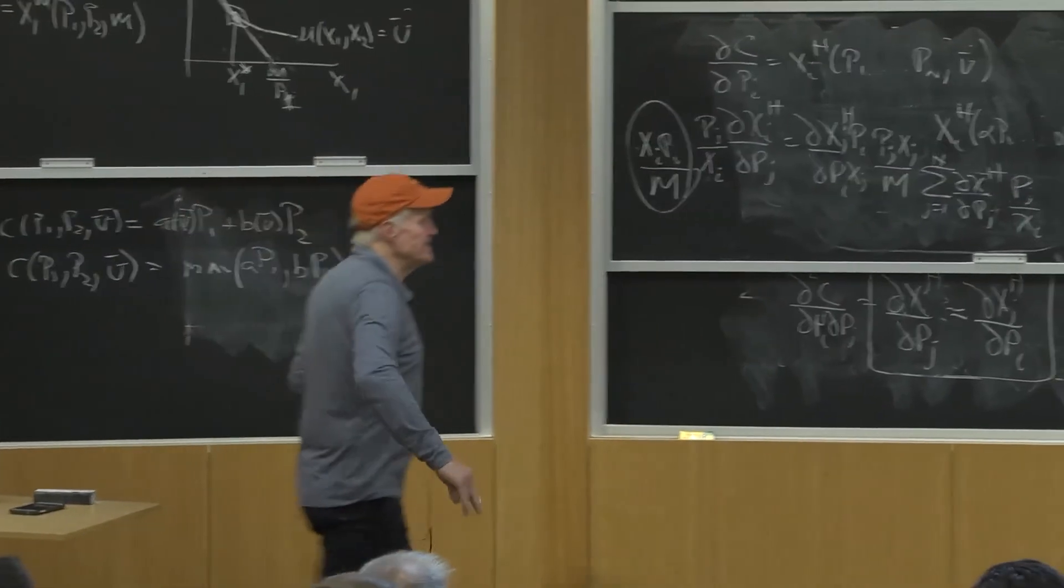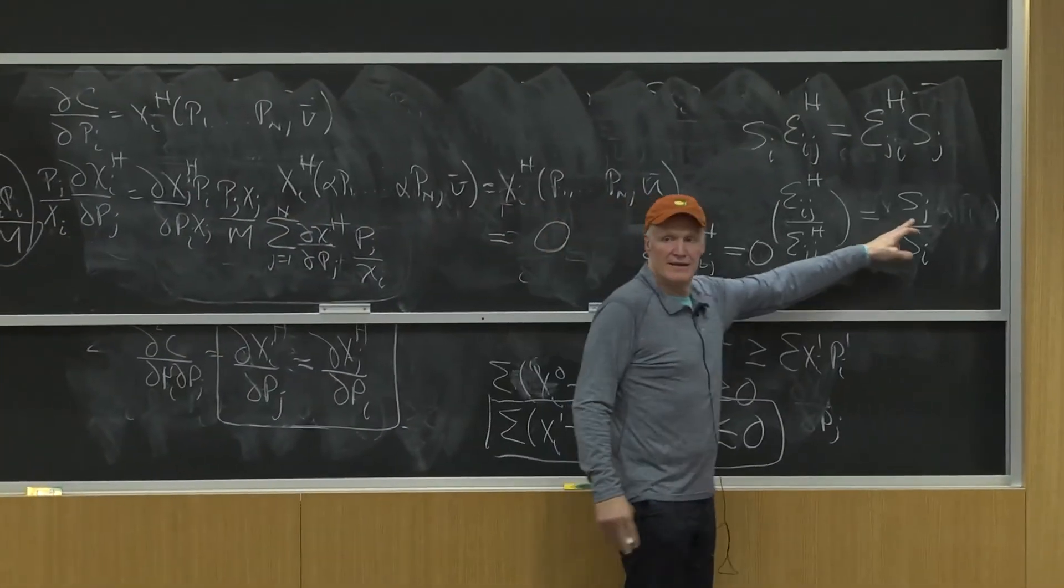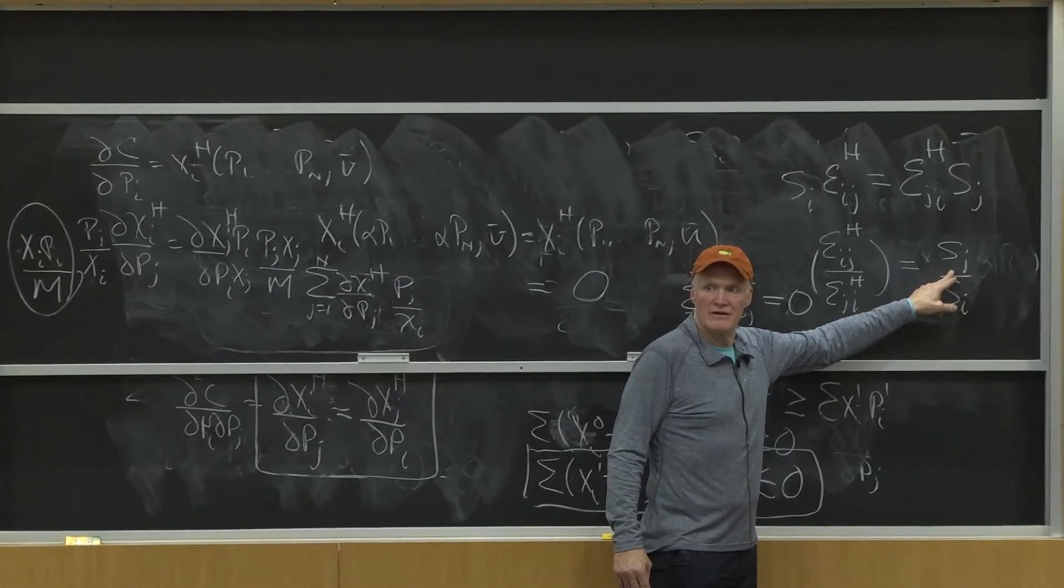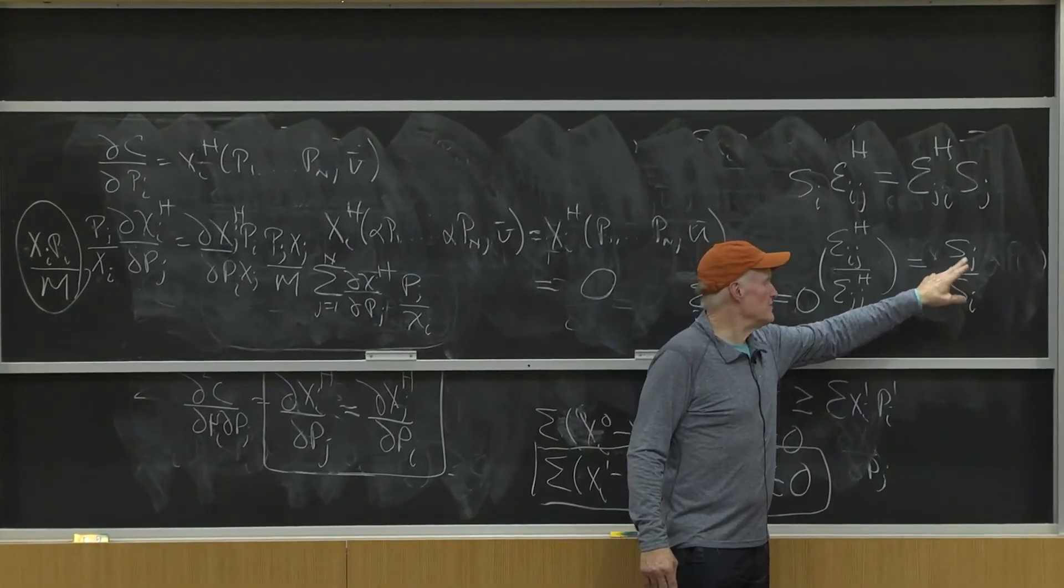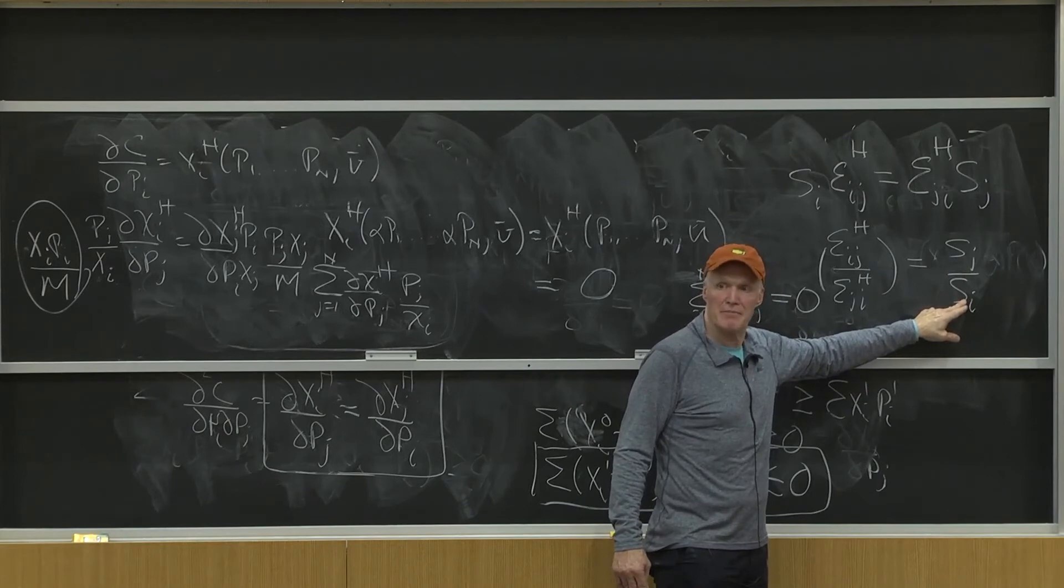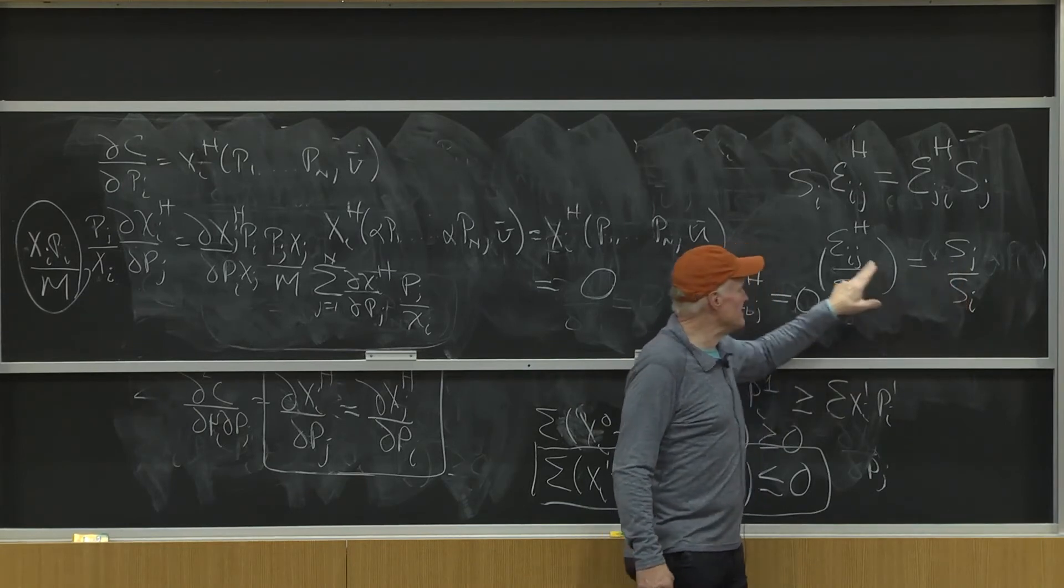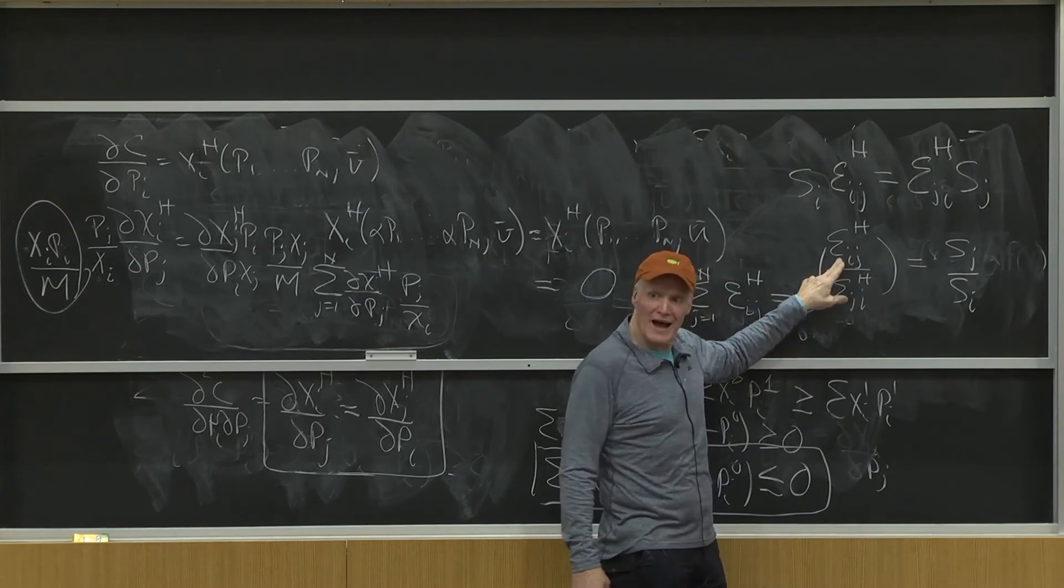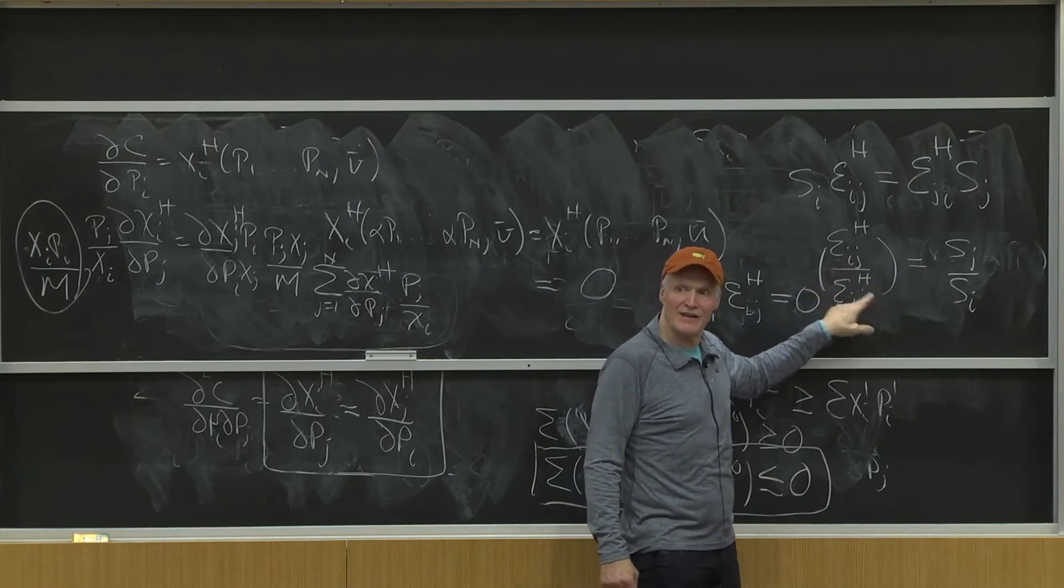What if s j is bigger than s i? That is, you spend more income on j than you do on i. It's got a bigger budget share. Then it says that j is more important for i than i is for j.